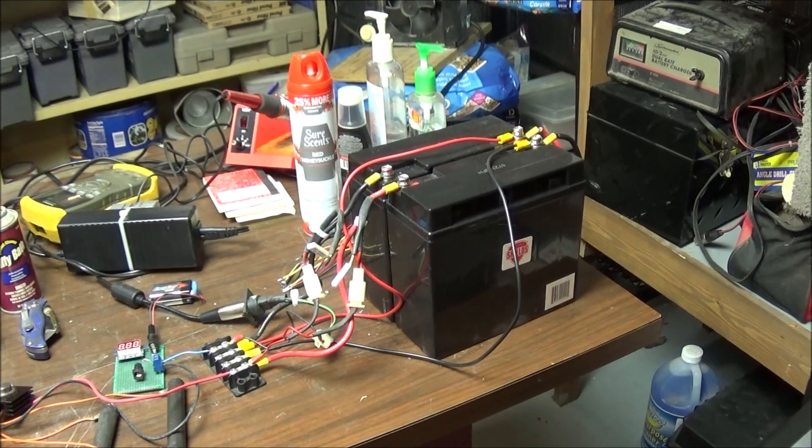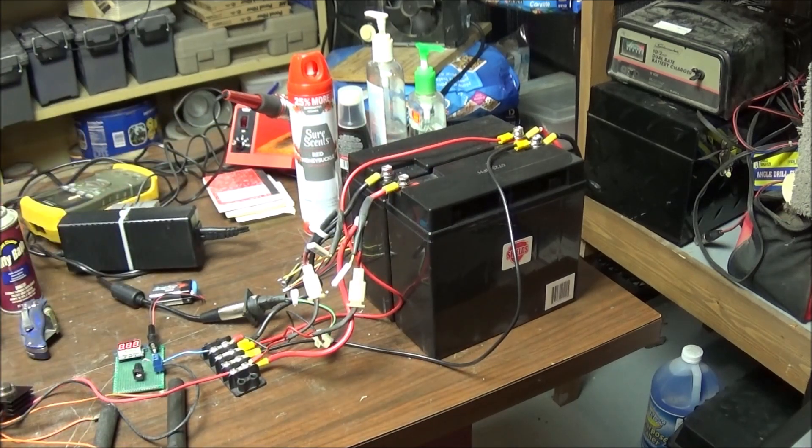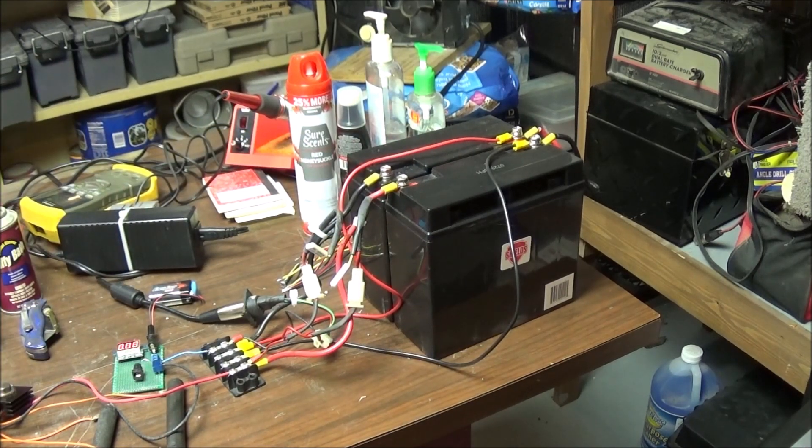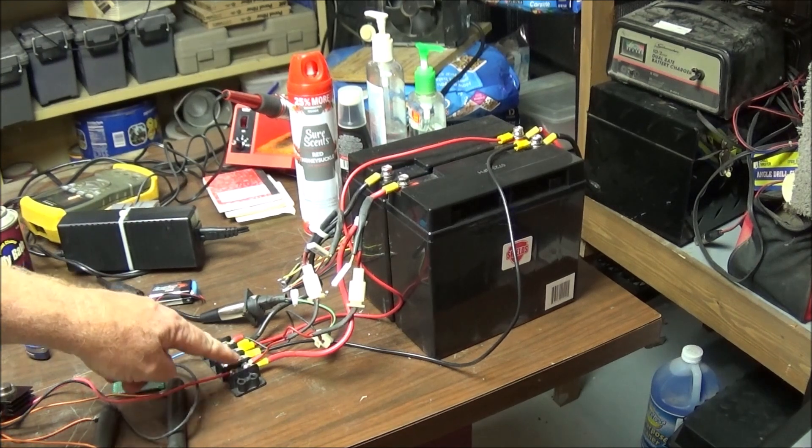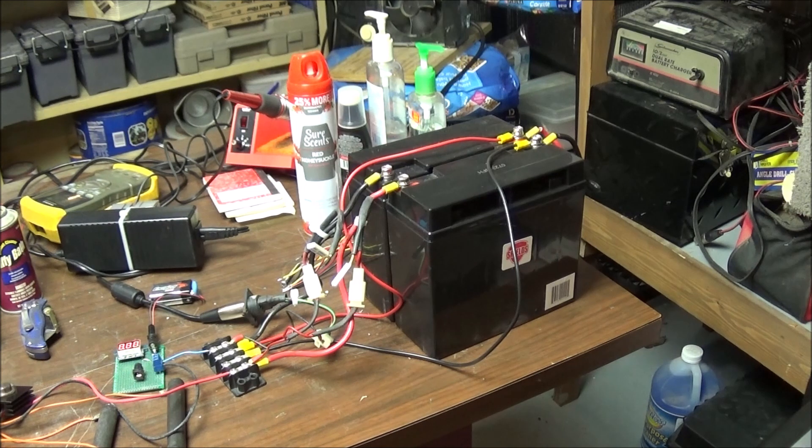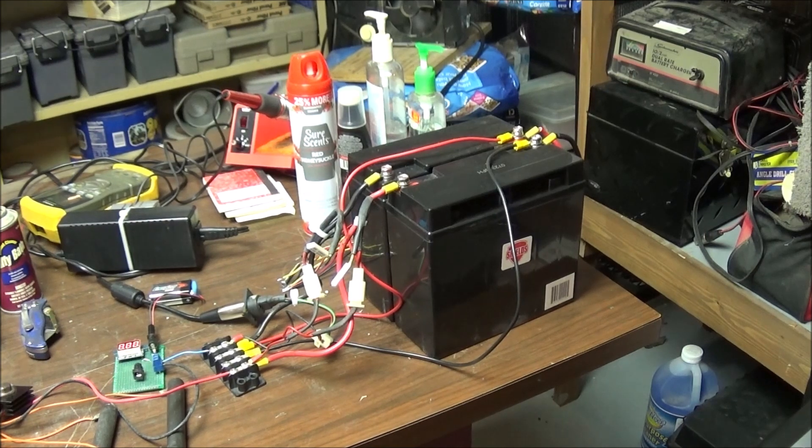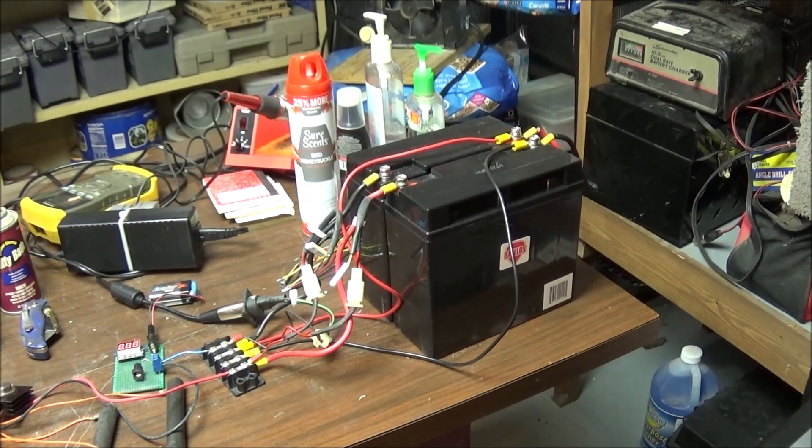These were salvaged out of an electric wheelchair. This is its power system, charging system, and the whole works. Through this terminal strip I can get 12 or 24 volts at a bunch of amps, and so that's where that power comes from. Let's look closer at the actual test circuits.